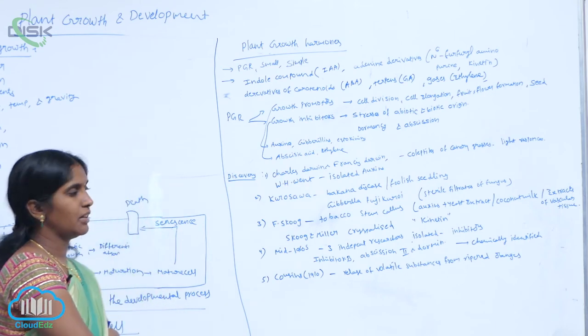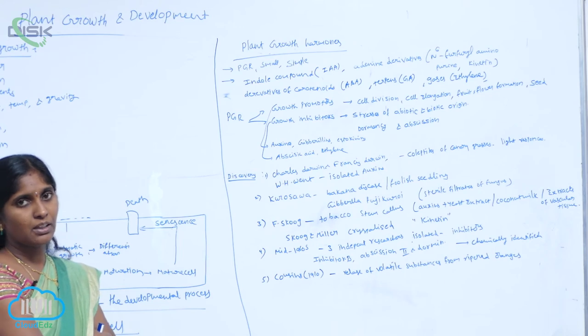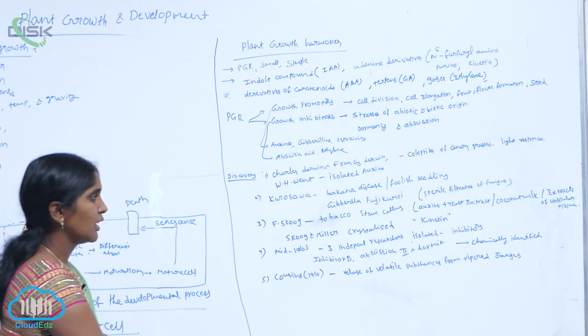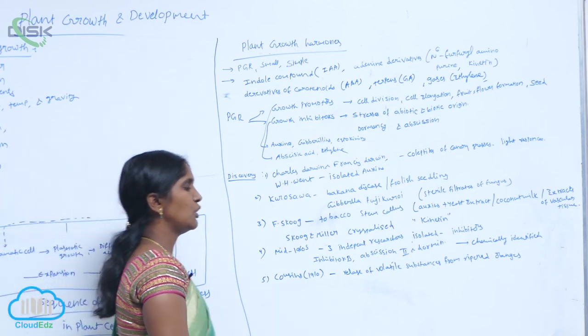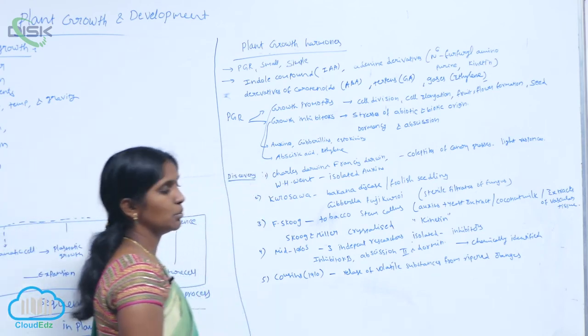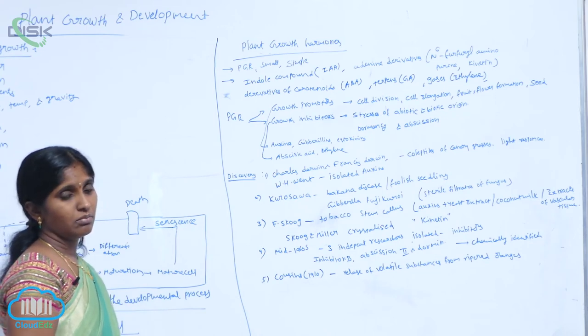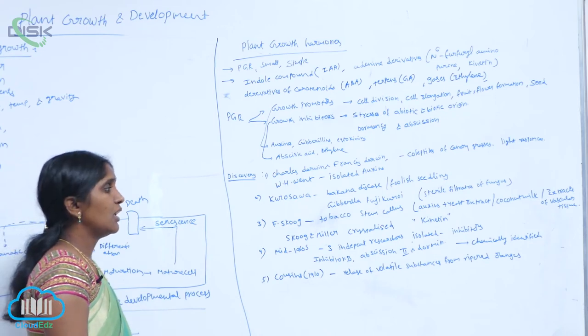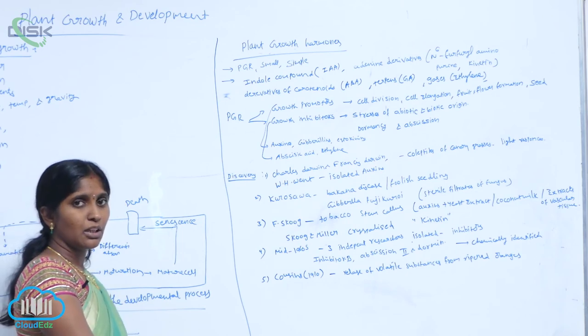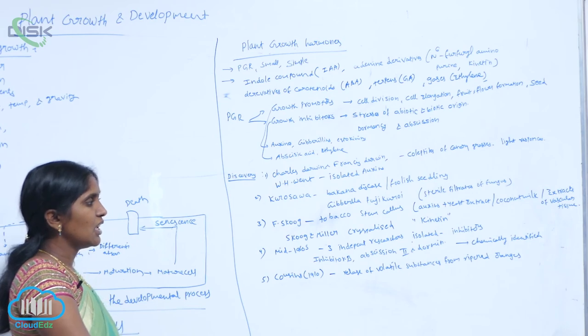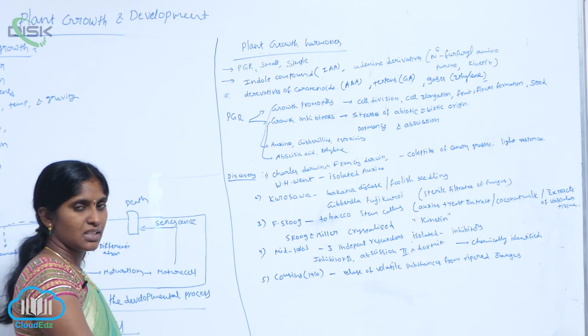Later, mid-1960s, three scientists independently isolated the inhibitors: inhibitor B, abscissin 2, dormin. These three are chemically analogous, chemically identical. Later, they concluded that these three are same compound, that is abscisic acid.